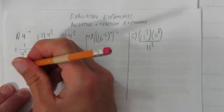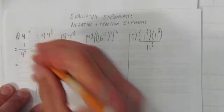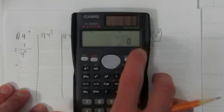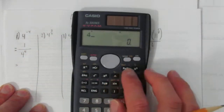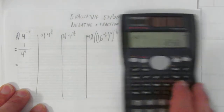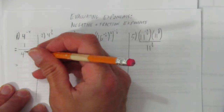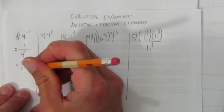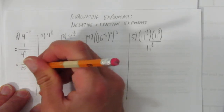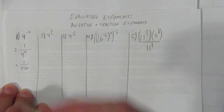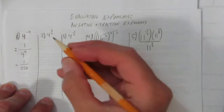We can do 4 to the power of 4 on our calculator, or in our heads. That's 256. So 1 over 4 to the power of 4 is just 1 over 256. That's how to do a negative exponent.